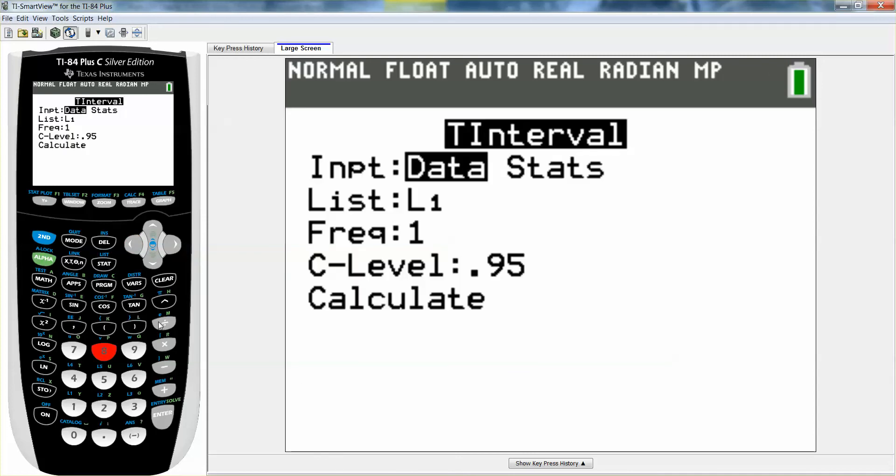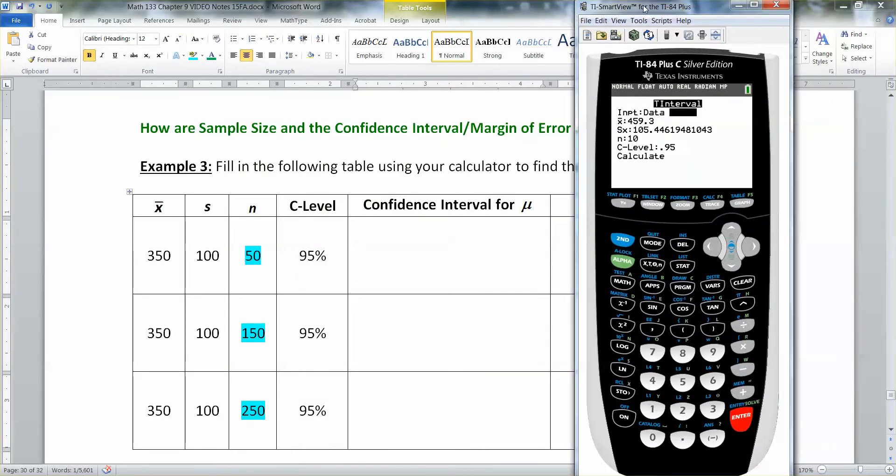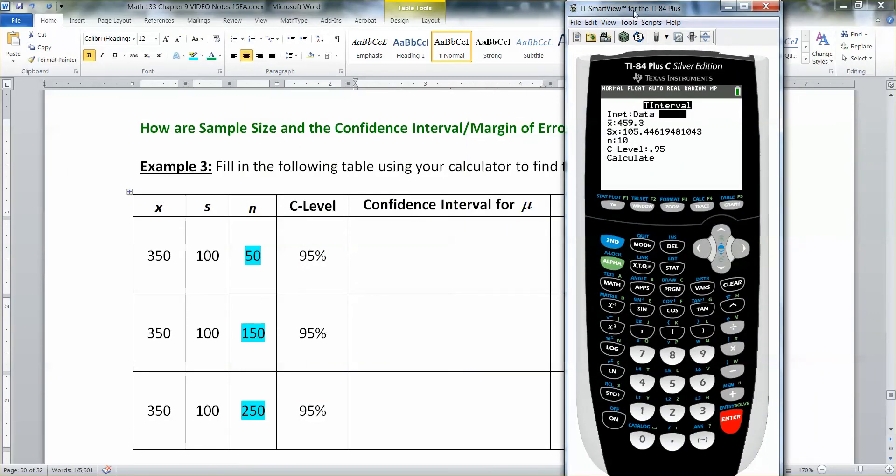Now you have a choice at this point. You have data and stats. We use data on the example we did in section 9-2 because we actually had a column of data. We don't have that in this problem. All we have are a bunch of statistics given to us in a table. Sometimes they won't even be nice and give it to us in a table. They're going to give it to us in a big paragraph and we're going to have to read and analyze it to find the values we want. That'll be fun.